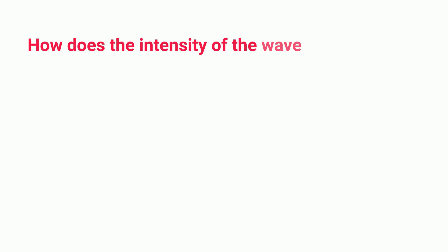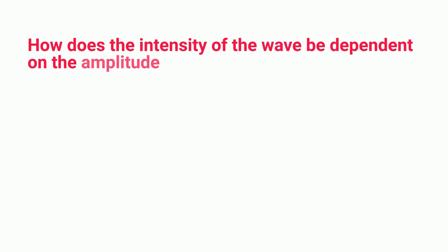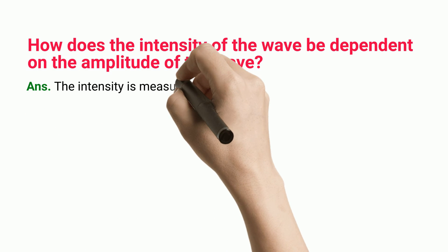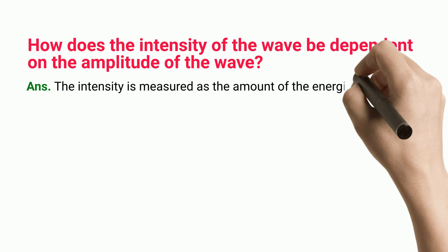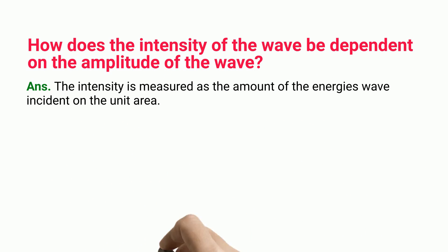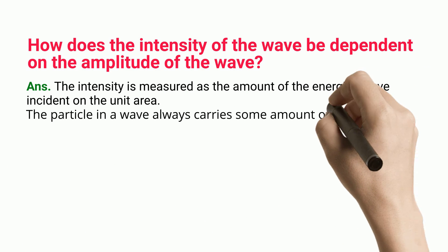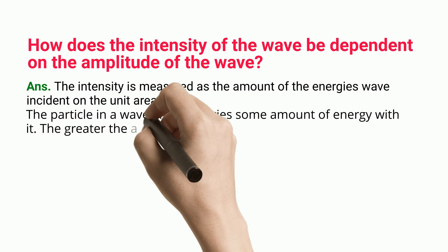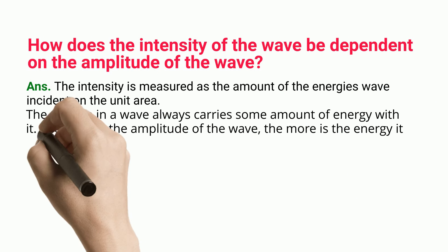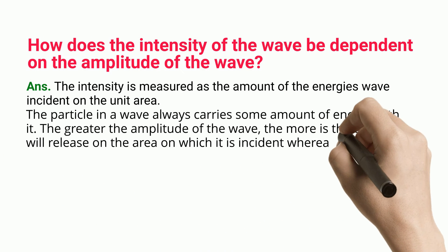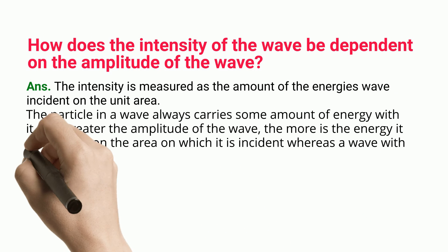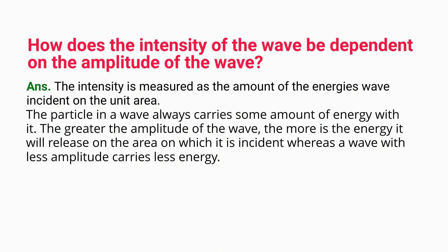How does the intensity of the wave depend on the amplitude of the wave? The intensity is measured as the amount of energy's wave incident on the unit area. The particle in a wave always carries some amount of energy with it. The greater the amplitude of the wave, the more is the energy it will release on the area on which it is incident, whereas a wave with less amplitude carries less energy.